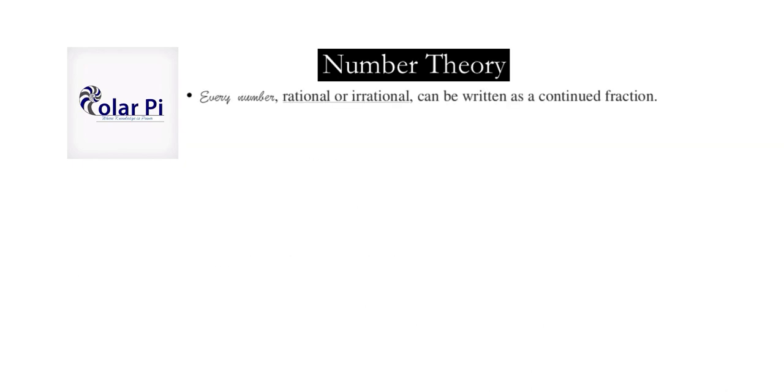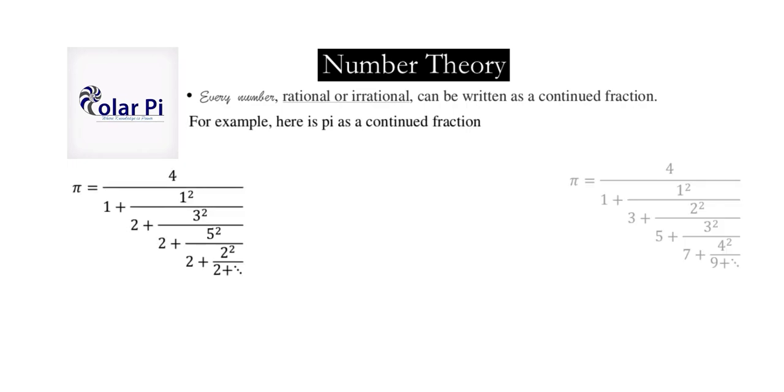Every number, rational or irrational, every real number can be written as a continued fraction. For example, here are three continued fraction representations of pi. Notice that this guy here on the left and this guy here on the right are not of the form that we showed earlier. And this middle guy doesn't have all the b's being one.